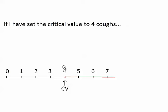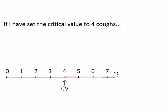Here is an example in which I have set the critical value to four coughs. If the number of times I cough during the day ends up below four, I fail to reject the null — I give it the benefit of the doubt and say that I am not sick. If it lands at four or higher, I reject the null and say that the null is false and that I do have a cold.